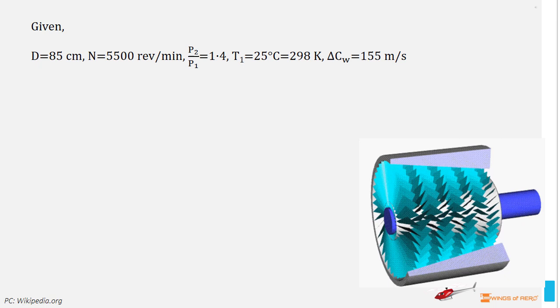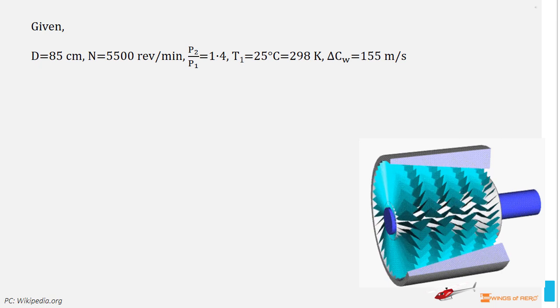Here, we consider axial compressor. Let me write the given data. Mean blade diameter, D is equal to 85 cm. Rotational speed of blade, N is equal to 5500 rpm. Pressure ratio of compression, P2 divided by P1 is equal to 1.4 and the inlet temperature of air, T1 is equal to 25 degree Celsius or 298 Kelvin.